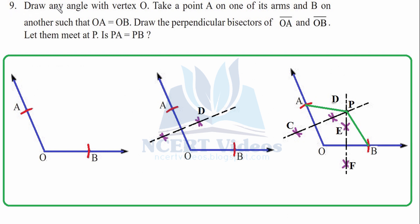Question 9: Draw any angle with vertex O. Take point A on one arm and point B on the other such that OA equals OB — mark them with equal compass radius. Draw the perpendicular bisector of line segment OA by opening the compass slightly more than half of OA and cutting arcs from both ends. Join the dotted lines to get the perpendicular bisector. Similarly, construct the perpendicular bisector of OB.